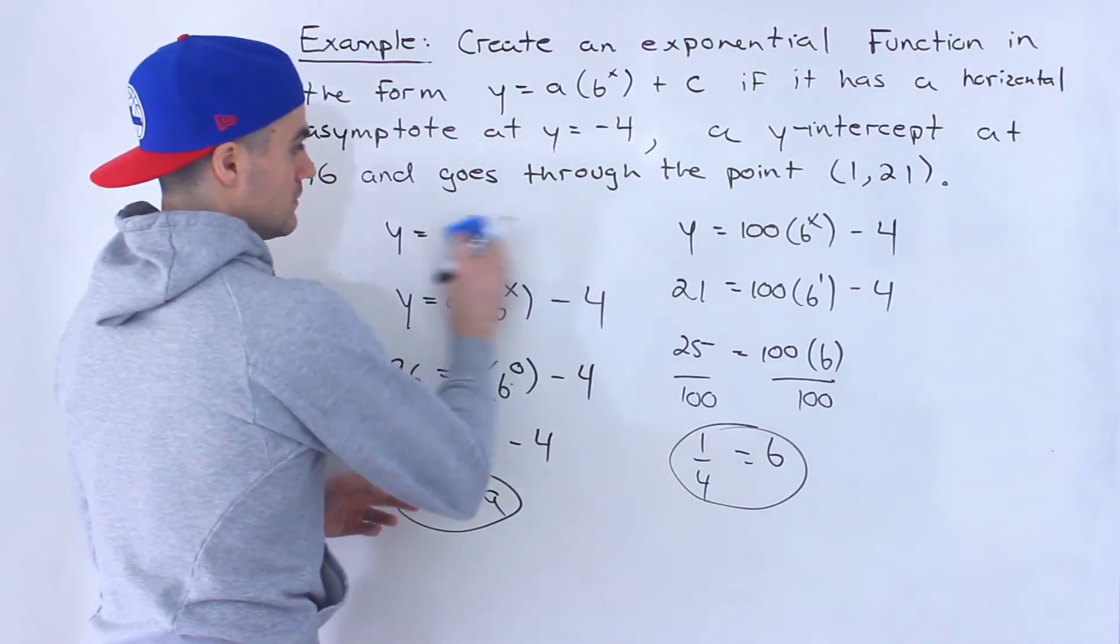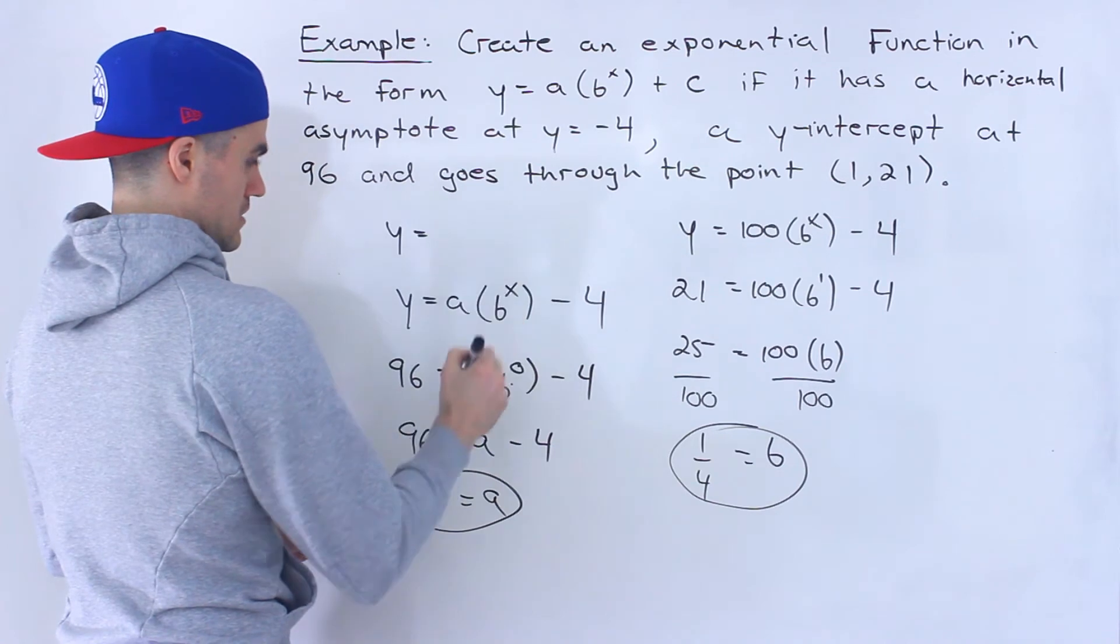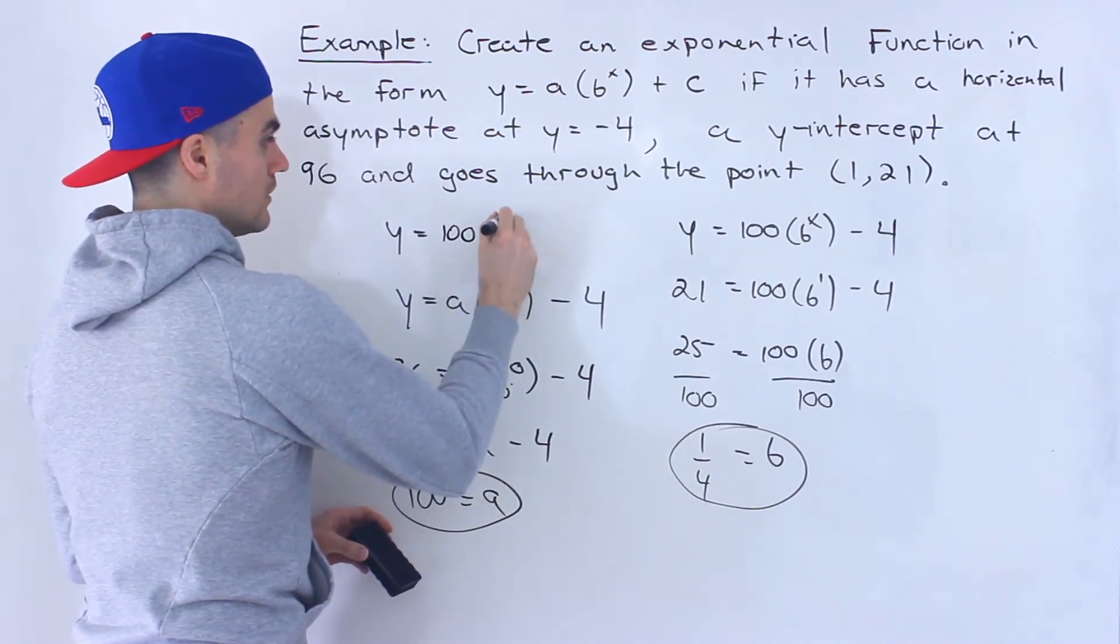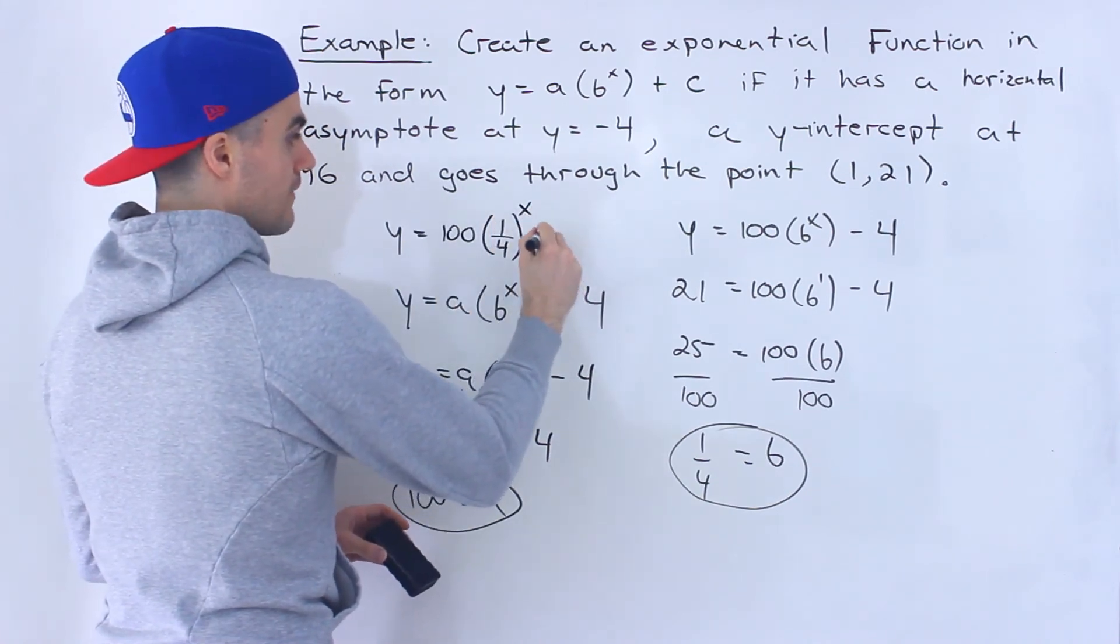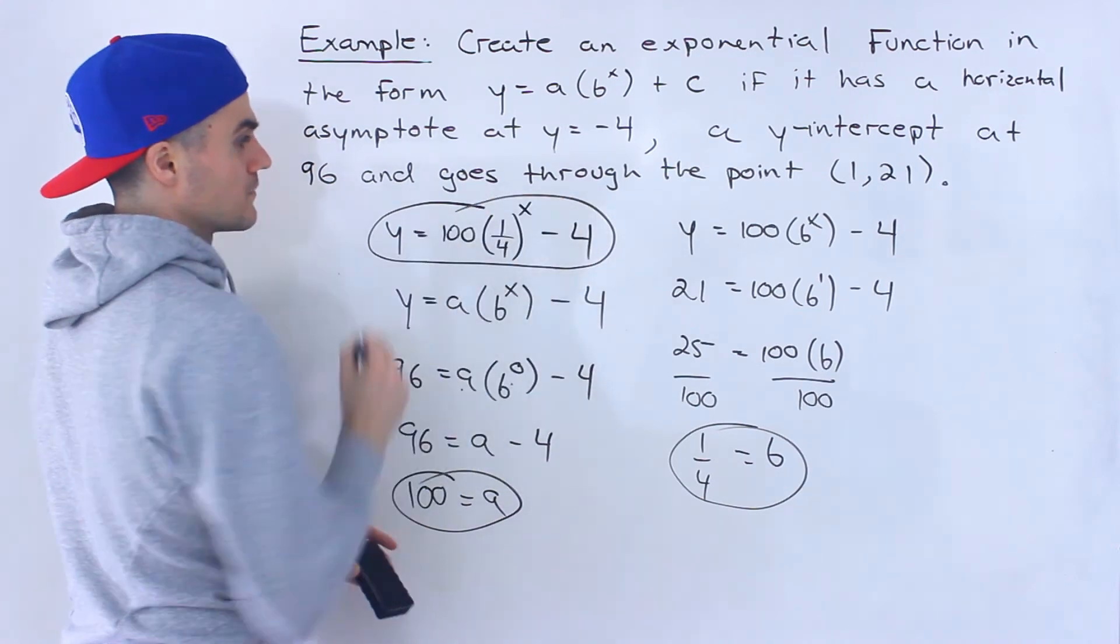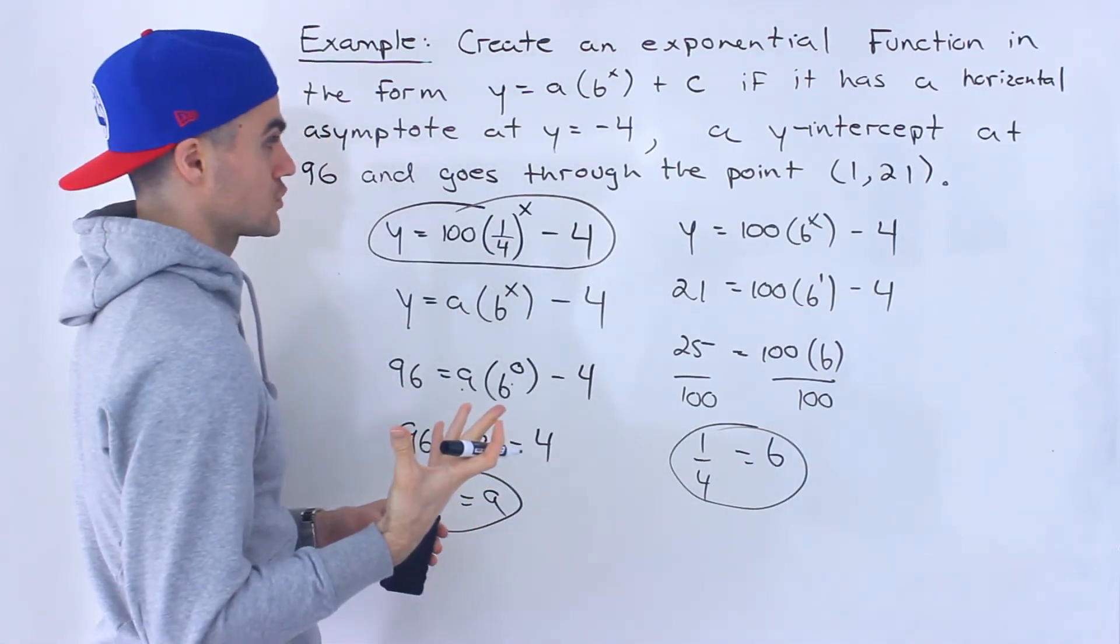And so the final answer would be the a value, 100, times 1 over 4 to the power of x, and then that c value, or that horizontal asymptote of minus 4. So that's what the final function would be.